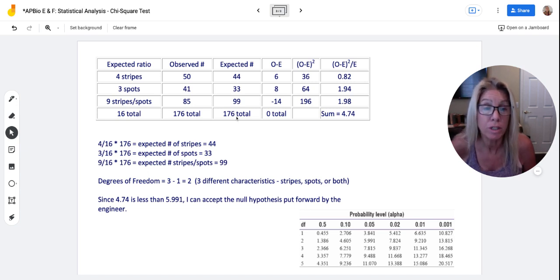You do the same thing for spots. You do the same thing for stripes and spots. That gives you your expected value. What comes next?